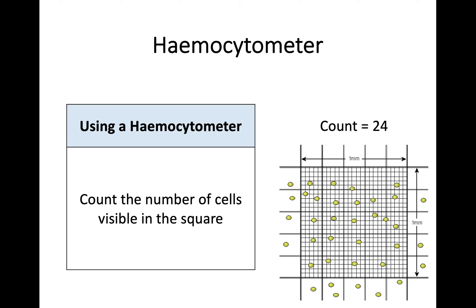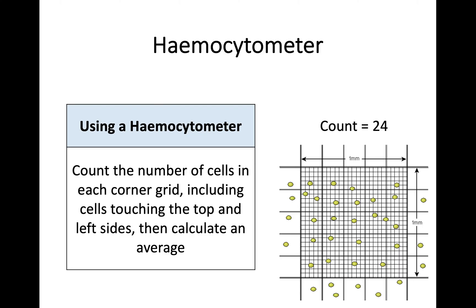In terms of using your hemocytometer, the standard practice is to count the number of cells visible in a square. When counting, hopefully you find there are 24 within the grid. The normal practice is to count along and then move across. If any cells are touching a line, to avoid counting them twice, the common method is to include cells that are in each box plus any cells touching the top and left sides only.